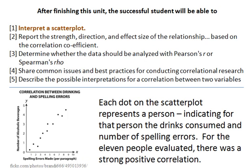We have five learning objectives for this unit. The first is to interpret a scatter plot. A scatter plot has both a y and an x axis and is a graphical representation of our data. On the y axis we see number of alcoholic beverages consumed, and on the x axis, number of spelling errors made per paragraph.